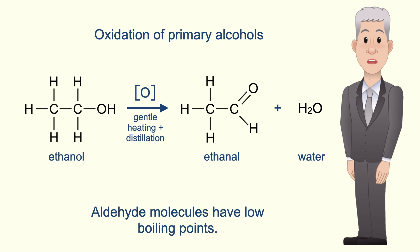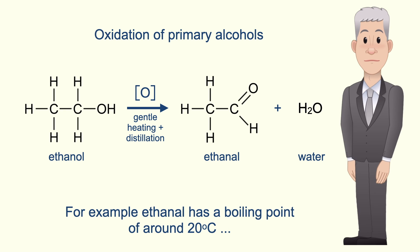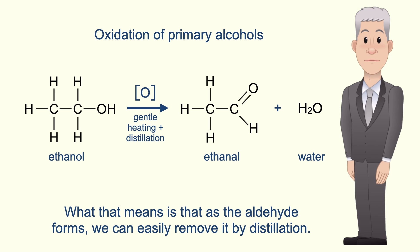Aldehyde molecules have low boiling points because aldehyde molecules cannot form hydrogen bonds. For example, ethanal has a boiling point of around 20 degrees Celsius, compared to ethanol with a boiling point of around 78 degrees Celsius. So as the aldehyde forms we can easily remove it by distillation.